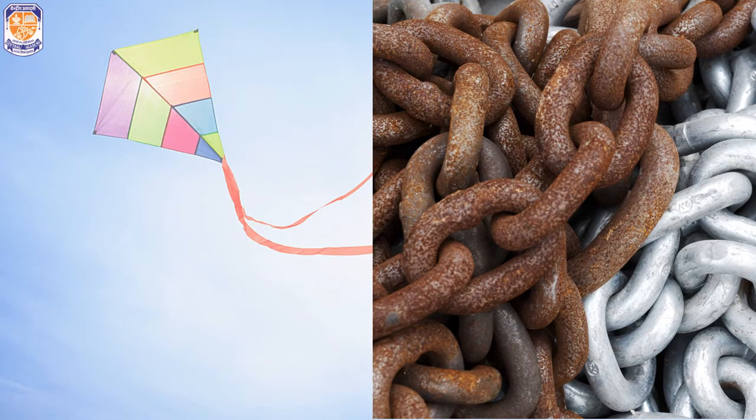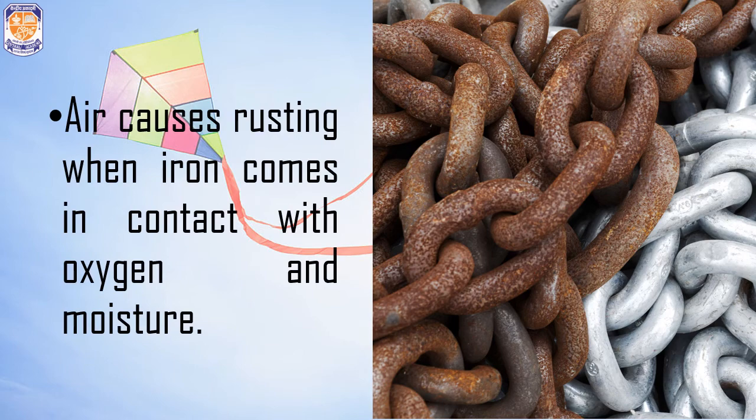Air is also responsible for causing rusting. Rust is the reddish-brown colored substance that gets deposited on the surface of iron when it is exposed for a long time. Iron comes in contact with oxygen and moisture — the water vapour present in the air — and reacts to produce this reddish-brown substance. This process is known as rusting.